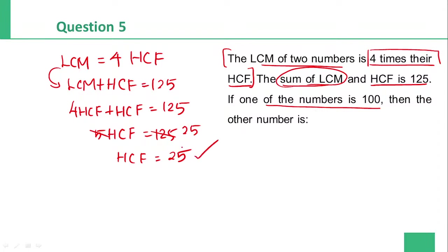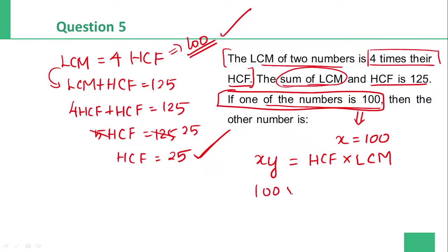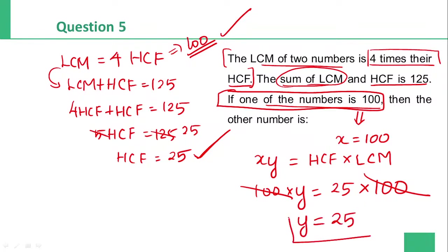Since HCF = 25, LCM = 4 × 25 = 100. Now using the product formula: X × Y = LCM × HCF = 100 × 25 = 2500. One number X = 100, so Y = 2500 / 100 = 25. The answer is 25.